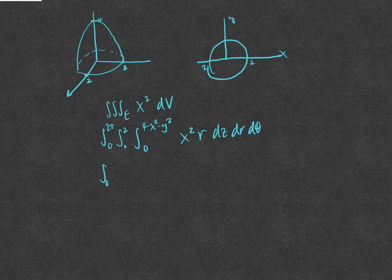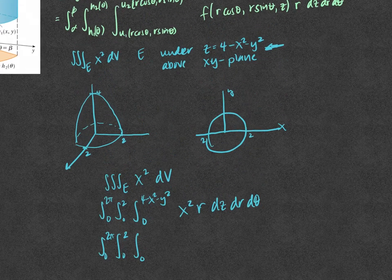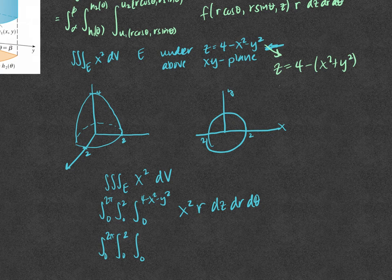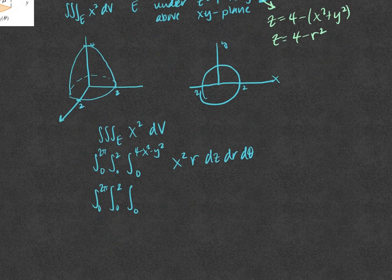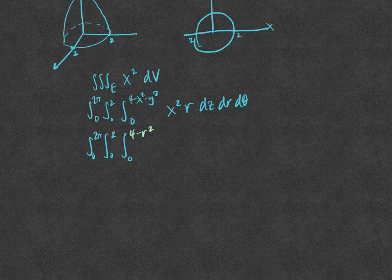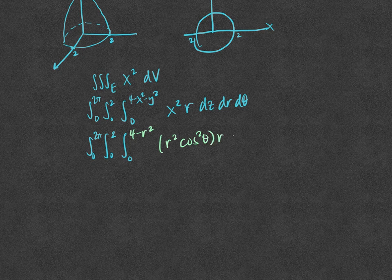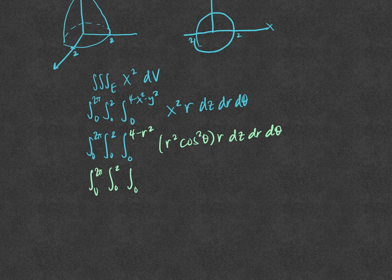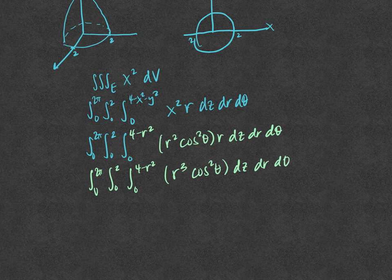We can't mix polar and rectangular, so we must replace x. In place of 4 minus x squared minus y squared, we note that x squared plus y squared equals r squared, so the upper bound for z becomes 4 minus r squared. And in place of x, we use r cosθ, so x squared becomes r squared cosine squared θ. Combining with the extra r from dV, we get r to the third cosine squared θ. So the integrand is r³ cos²θ and we integrate from z = 0 to z = 4 − r² with respect to z, dr, dθ.